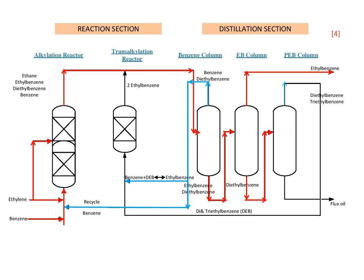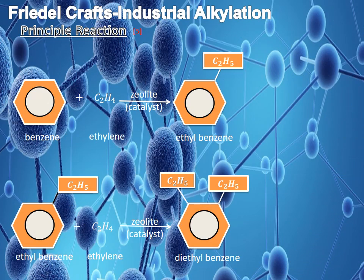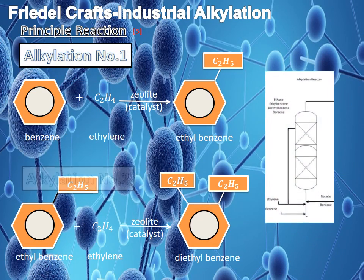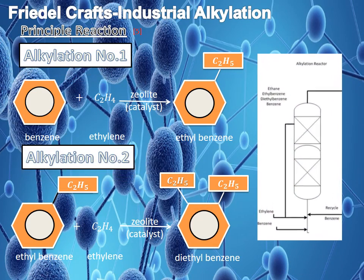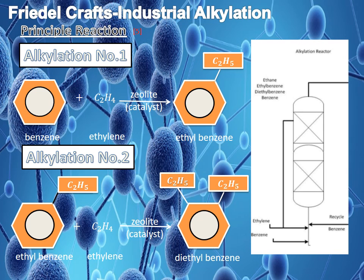The remaining product from the EB column enters the PEB column. It will be recycled to the transalkylation reactor together with the unreacted benzene to form ethylbenzene. The principal reactions in this process are alkylation (reactions 1 and 2) and the transalkylation process. The reactor typically operates at 450 degrees Celsius and 25 bar.